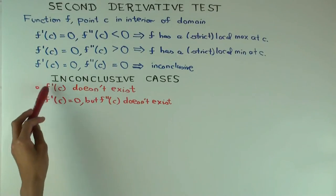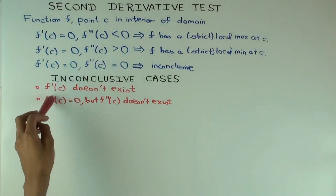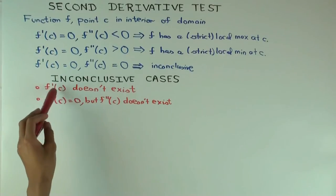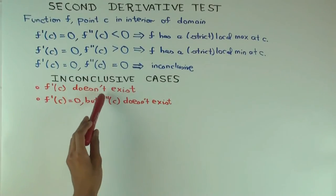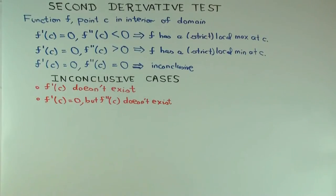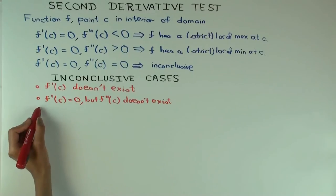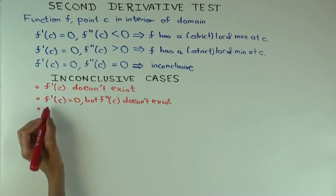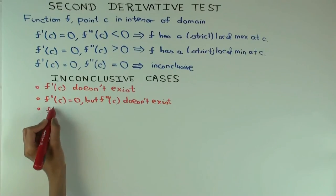Okay. So, for both these situations, you may be able to use the first derivative test. You may not be. It's not clear. Okay. But definitely, there could be examples where you have either of these problems in the second derivative test, but you're still able to use the first derivative test. What's the third type of inconclusive case? Second derivative exists but equals to 0.